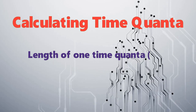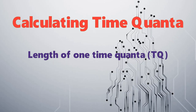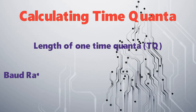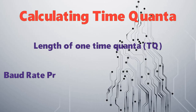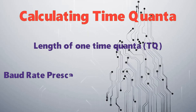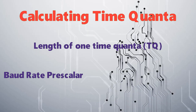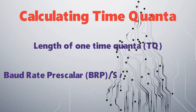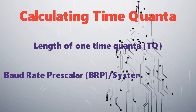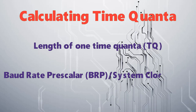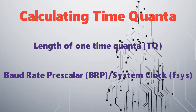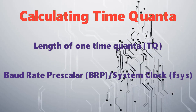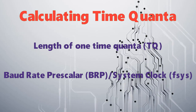The length of one time quanta can be calculated by the baud rate prescaler, i.e. BRP, divided by the system clock f_sys.